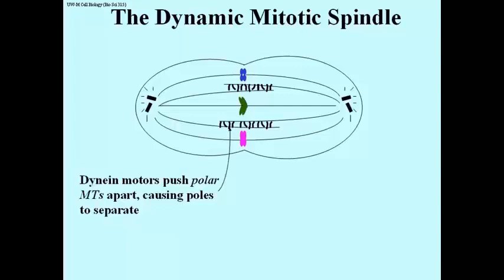They have dynein motors. Those motors function to push microtubules apart, which causes the poles of the cell to separate, causing what is otherwise a round cell to become stretched and ovoid and then eventually to separate entirely.